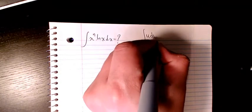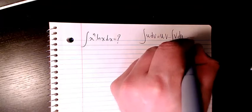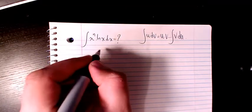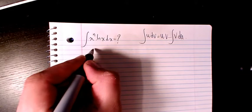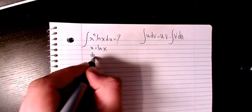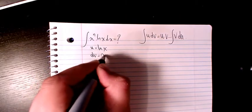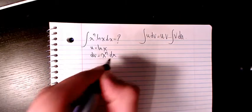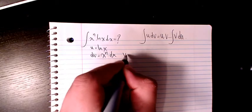Integration by parts is: the integral of u dv equals u times v minus the integral of v du. So in this case, u is ln x and dv is x to the power of n dx.